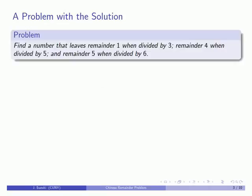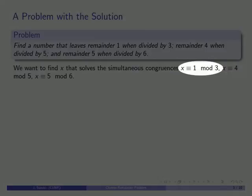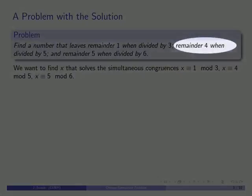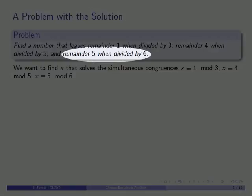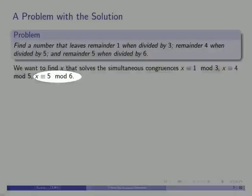Let's take a look at a problem. We want to find a number that leaves remainder 1 when divided by 3, remainder 4 when divided by 5, and remainder 5 when divided by 6. The Chinese remainder problem is equivalent to solving a system of simultaneous congruences: x congruent to 1 mod 3, x congruent to 4 mod 5, and x congruent to 5 mod 6.